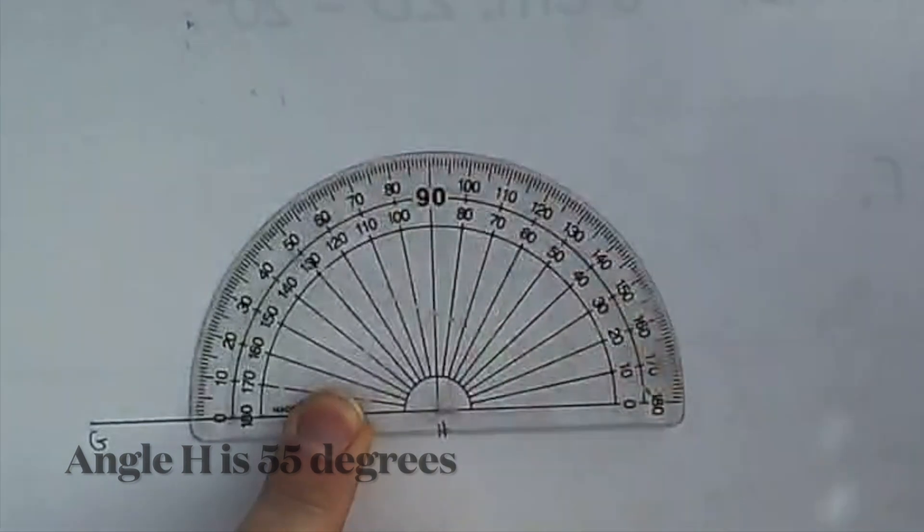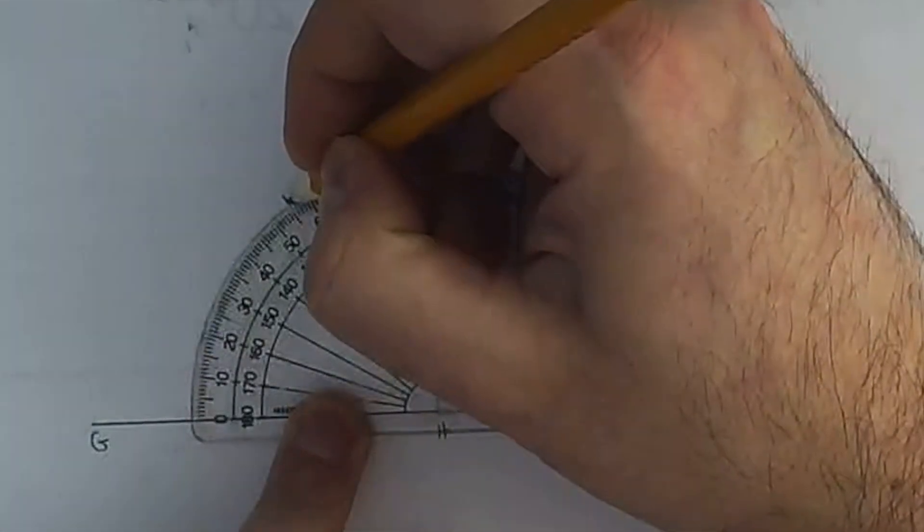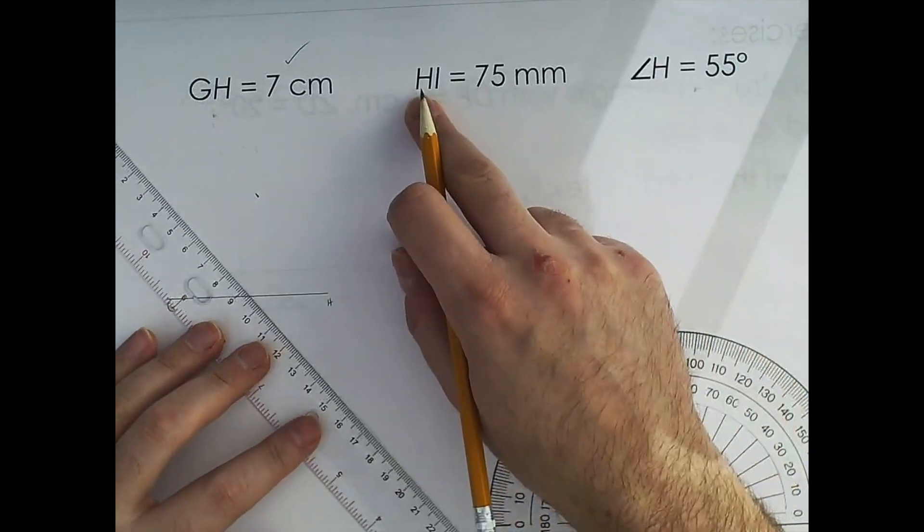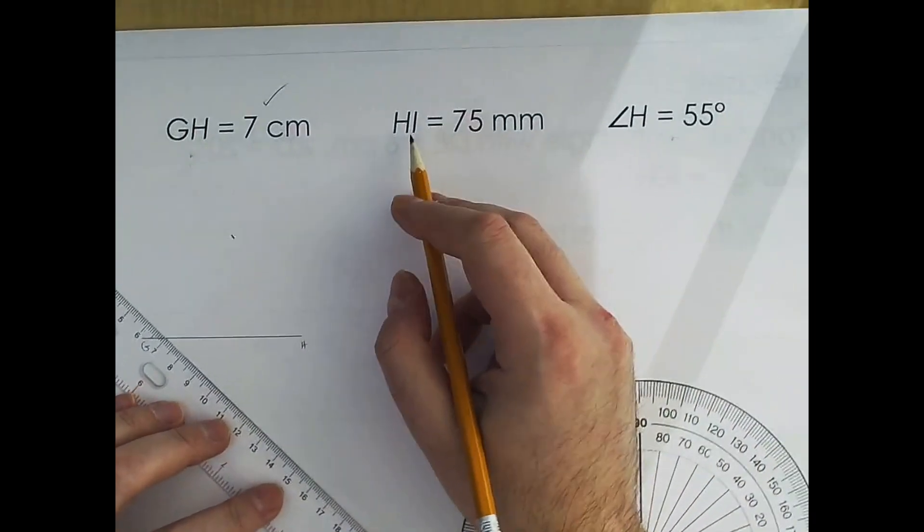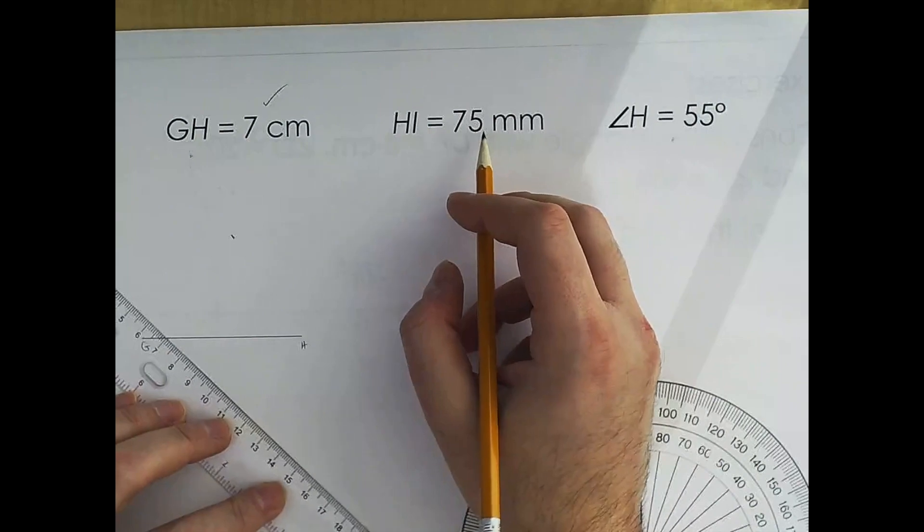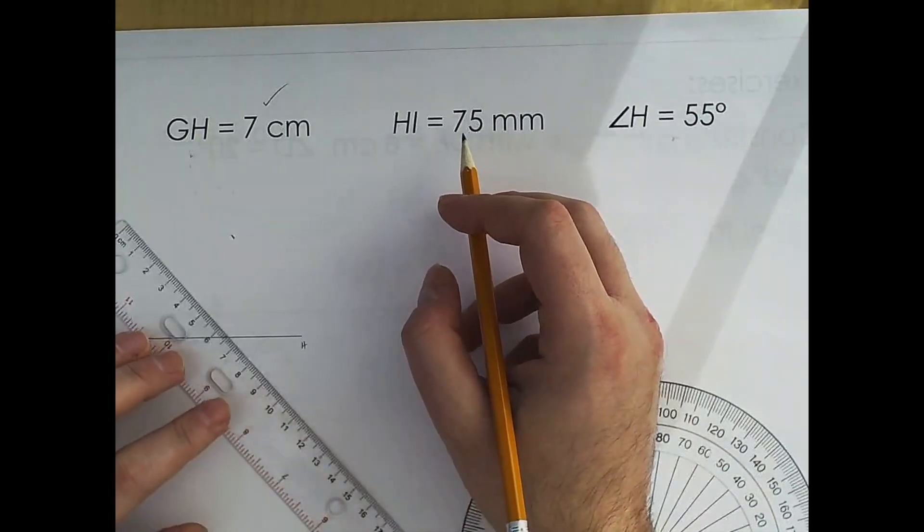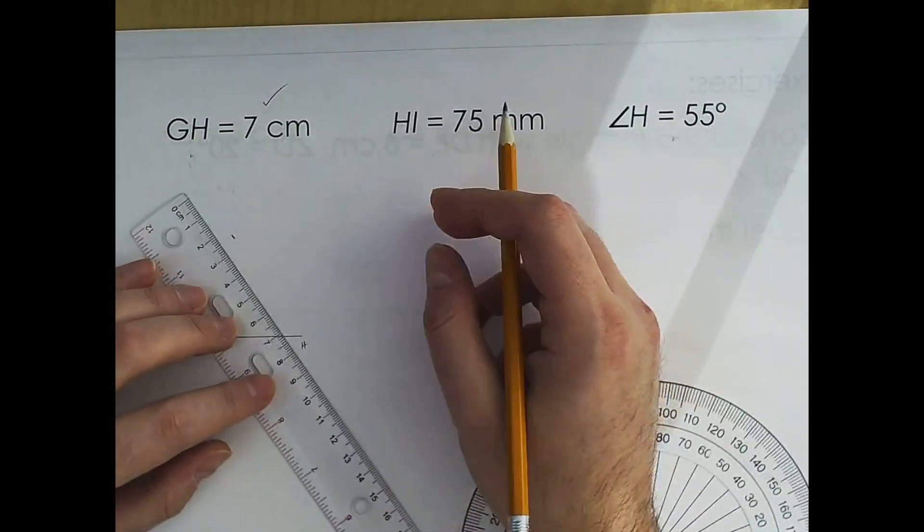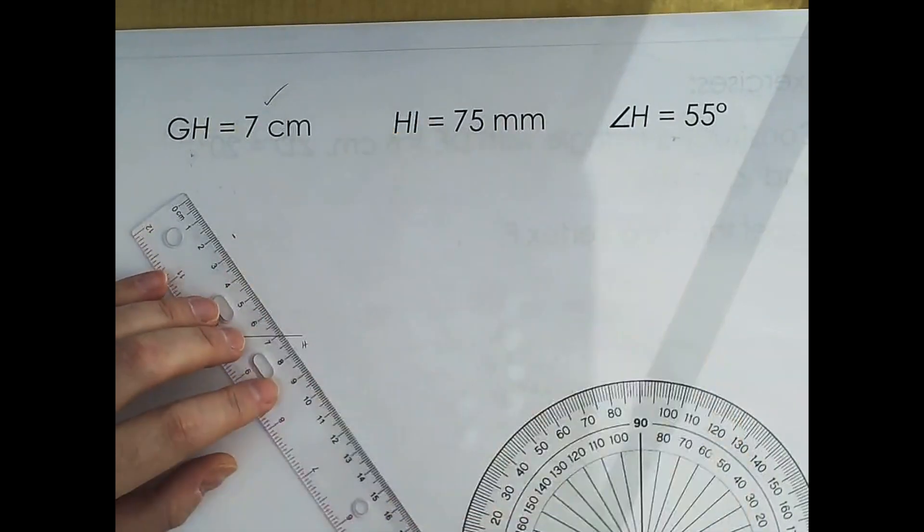It's 55 degrees, and this line is H. This next one is HI, it's 75 millimeters, which is 7.5 centimeters. So here's how I would do something like this.